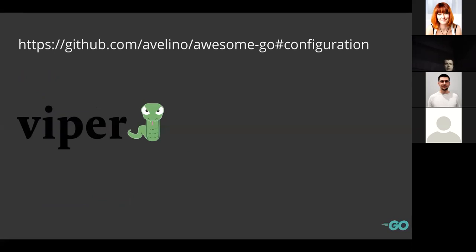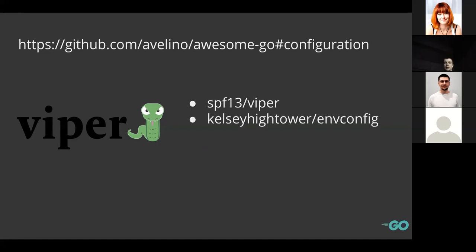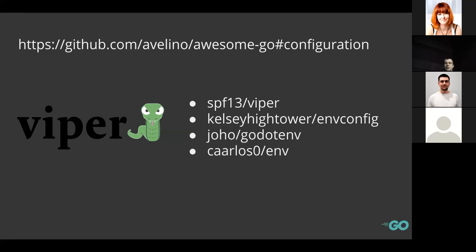Looking at available packages, Viper is the most famous one based on GitHub stars and is already widely used in production. There's also Kelsey Hightower's `envconfig` package, which is used for parsing `.env` files — as I recall it sets variables into the environment and then pulls them from environment variables. Another package simply named `env` is also available. Let's move from the simplest to more complex ones.